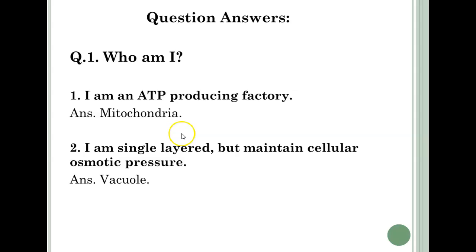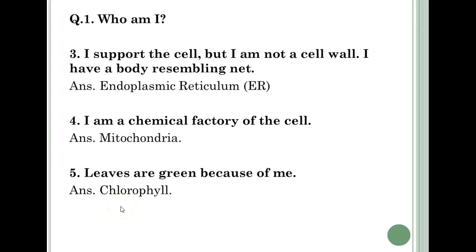First question — Who am I? I am an ATP producing factory. Answer: Mitochondria. Second question — I am single layered but maintain cellular osmotic pressure. Answer: Vacuole. Third question — I support the cell but I am not a cell wall. I have a body resembling a net. Answer: Endoplasmic Reticulum, that is ER. ER is the short form of Endoplasmic Reticulum.